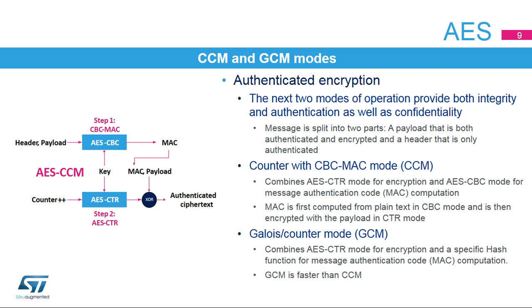The same key is used for both the CTR and CBC passes. The second authenticated encryption mode is the Galois counter mode, or GCM. Confidentiality of data is provided using a CTR mode, and authenticity of the confidential data is provided using a universal hash function defined over a binary Galois field. GCM is faster than CCM as authentication computation takes fewer cycles. The universal hash function uses 10 cycles, while an AES round uses 14.